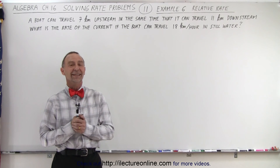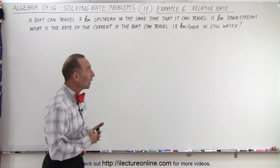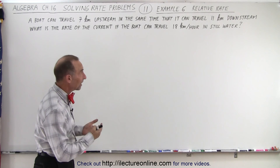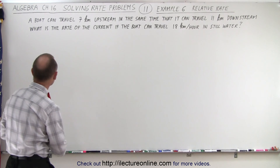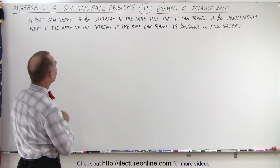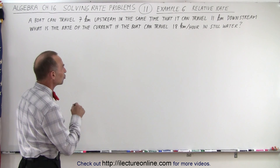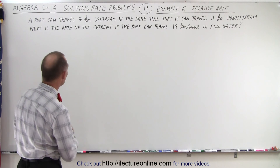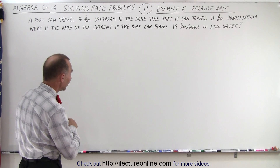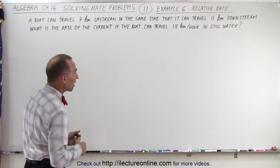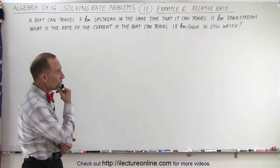Welcome to our lecture online. Here's one more example when we're dealing with rates — in this case, relative rates. A boat can travel 7 kilometers upstream in the same time that it can travel 11 kilometers downstream. What is the rate of the current if the boat can travel 18 kilometers per hour in still water?